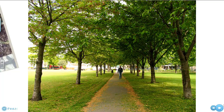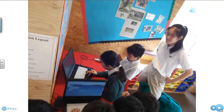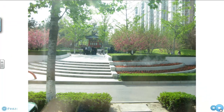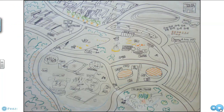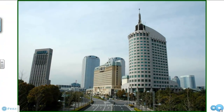Students studied urban green spaces in social studies. After discussing what we knew to check for prior knowledge, we then conducted research online. After that, we reflected on how well local parks served our needs before working in small groups to map out an ideal park for our local area. This setting was based on the idea that Chiba City was accepting proposals for a new park and we were design teams.